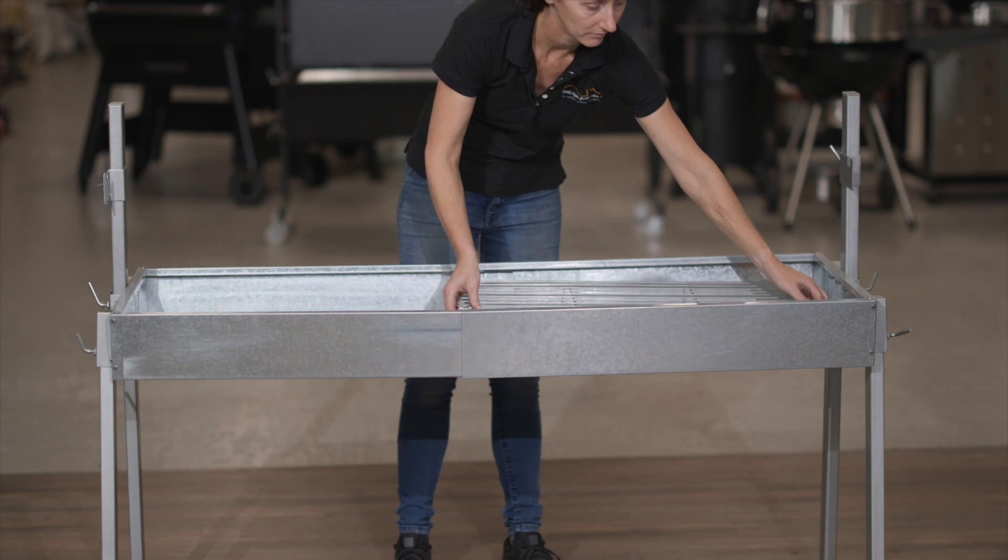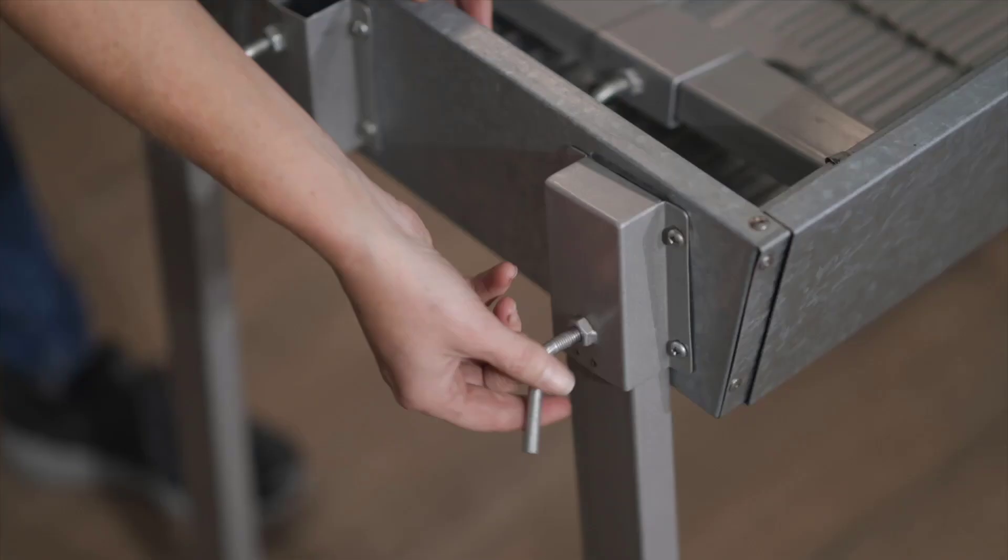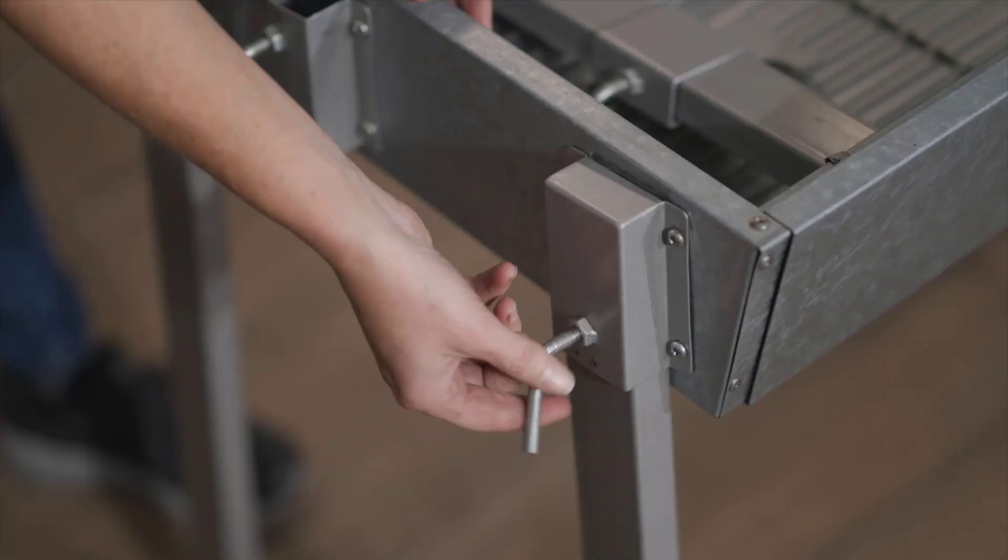When you're done impressing your family and friends, the spit folds away neatly into a small box, perfect for taking away with you or for storing away. It packs away into only 78 by 56cm by 12.5cm, meaning it won't take up much room in the shed when you aren't using it.